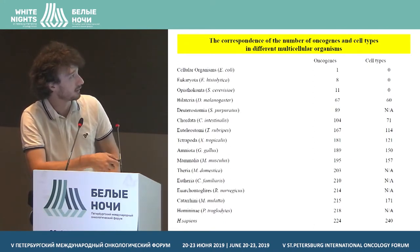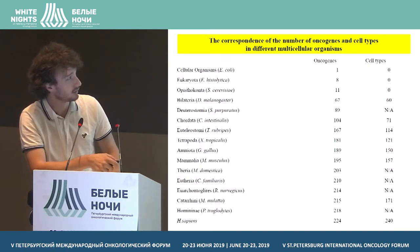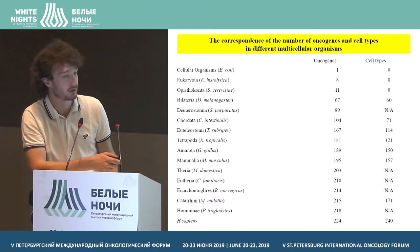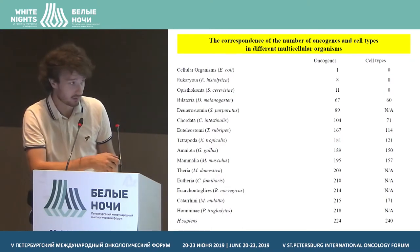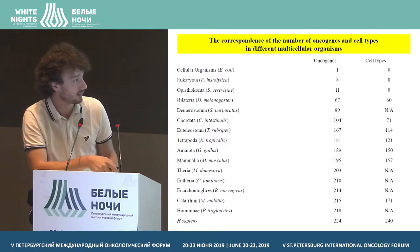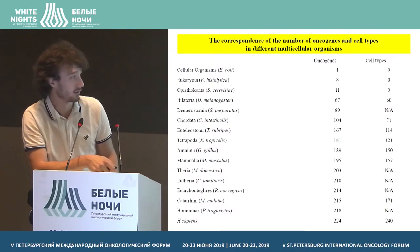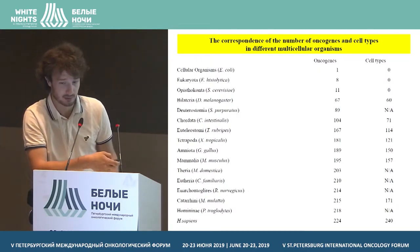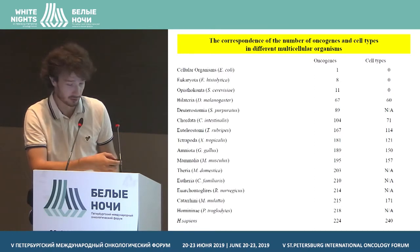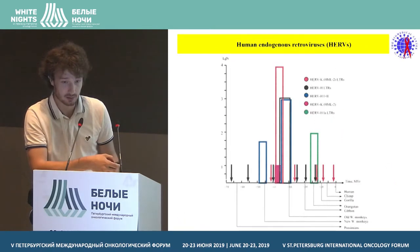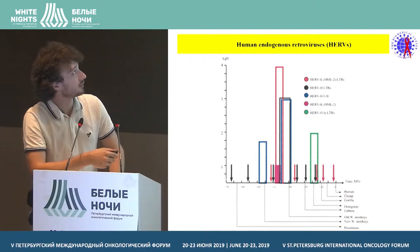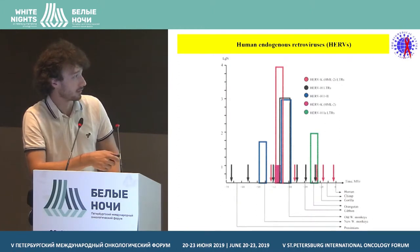We decided to compare all the cell types and the number of oncogenes in various taxa and various organisms. As you see, there is really a correlation between the number of oncogenes and the number of cell types — where N/A means the number of cell types couldn't be found. We found this data in various publications. There is a correlation, certainly. These are morphological cell types, mind you.